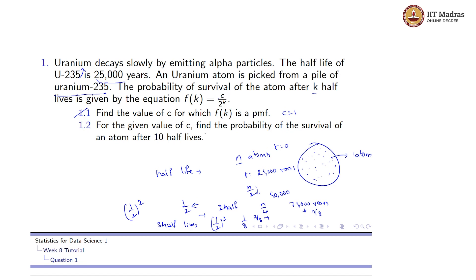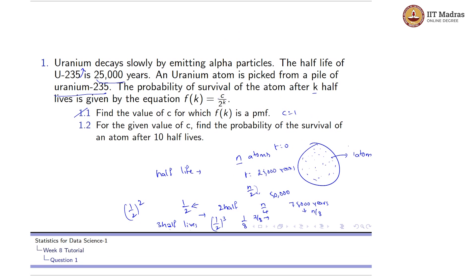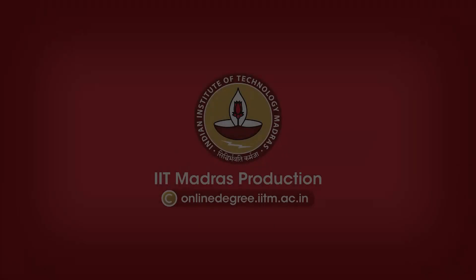For the given value of c, find the probability of survival of the atom after 10 half-lives. The probability after k half-lives is given by 1 / 2^k. For k = 10, the probability equals 1 / 2^10. This is the second question's answer: 1 / 2^10. Thank you.